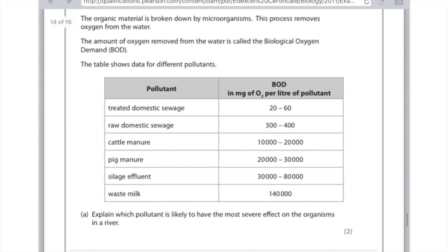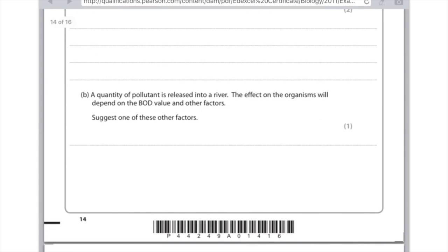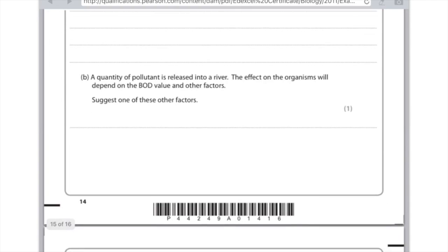Explain means you need to say why. Identify which pollutant has the largest BOD, which is waste milk, for the first mark. You can say why: because it produces more bacteria, or the bacteria use up more oxygen as a result of having more milk to feed on. A quantity of pollutant is released into a river. The effect on organisms will depend on the BOD value and other factors. Suggest one of these other factors. Anything sensible: the temperature, the light levels, the speed of river flow, or the nitrate content of the pollutant.